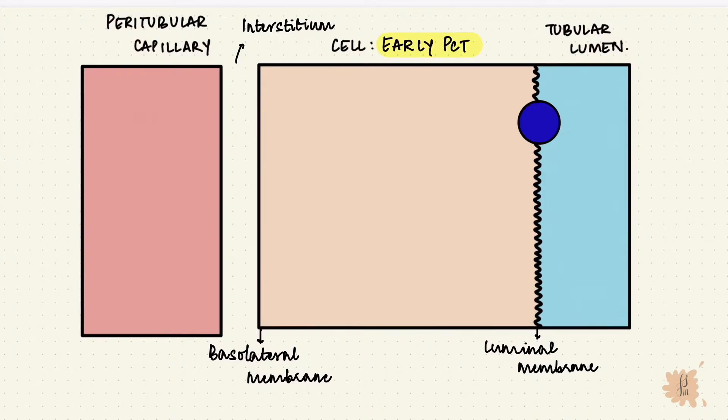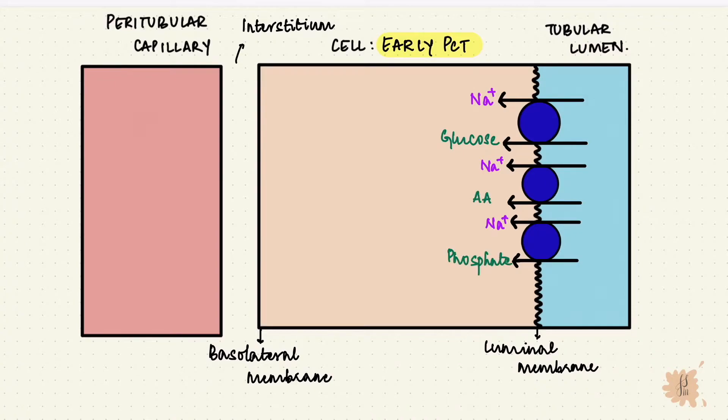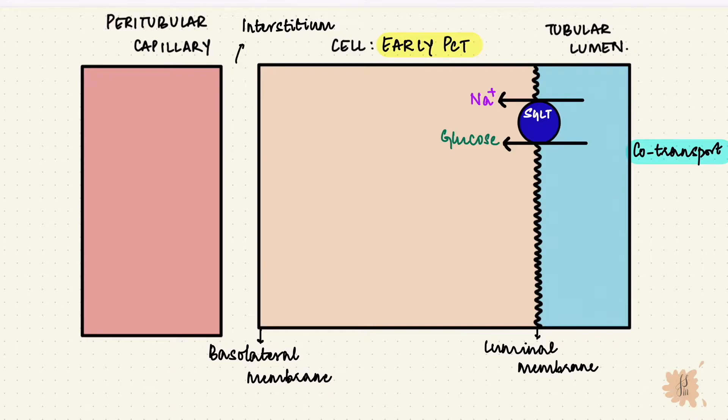Sodium gets reabsorbed from the tubular lumen, along with glucose, amino acids, phosphate, and a few other solutes. Since both of them are moving in the same direction, this is a co-transport. For sodium and glucose, it's called a sodium-glucose co-transporter, or SGLT.